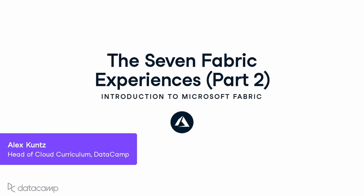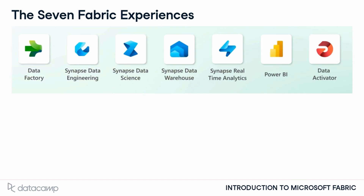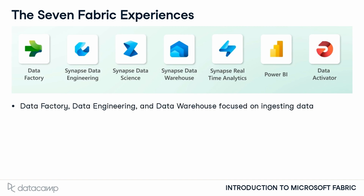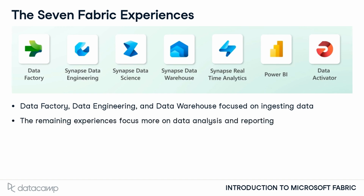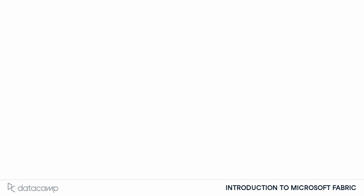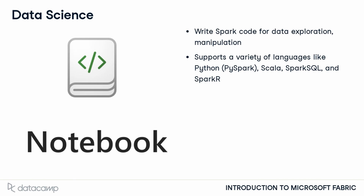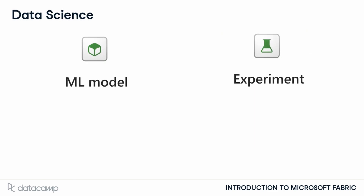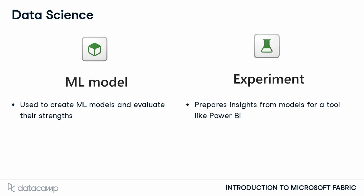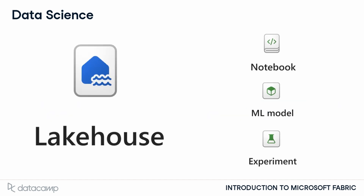Let's dive back into exploring the seven Fabric experiences. So far, we've explored three of the seven. Now let's look at the remaining four: Data Science, Real-Time Intelligence, Power BI, and Data Activator. The first three experiences were more in the data engineering world; these are much more focused on analysis and reporting. The main tools in Data Science are focused on building models and experiments. Data scientists can use notebooks to write Spark code for initial data exploration and manipulation. Once data is prepared, the ML model and experiment tools can be used to create machine learning models, evaluate their relative strengths, and prepare insights for a tool like Power BI. The Data Science experience contains all the tools a data scientist would need for an end-to-end machine learning workflow, and these tools primarily work with lake houses.